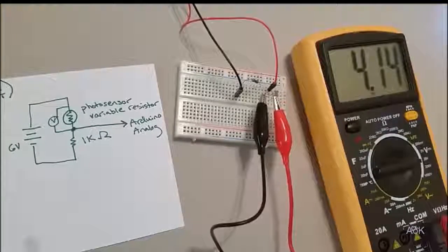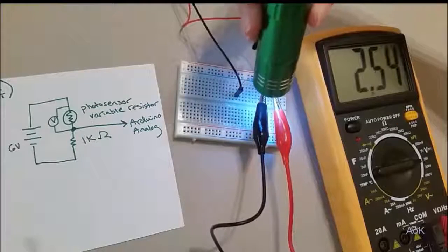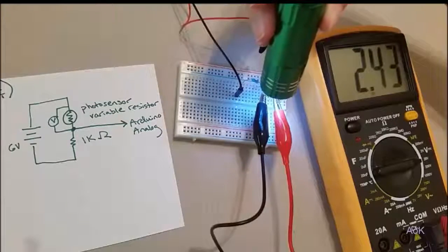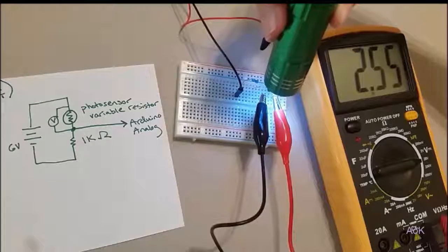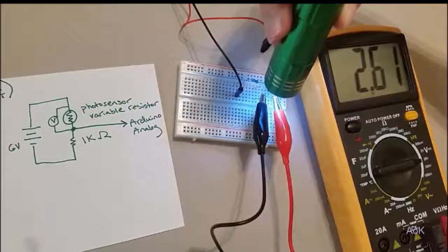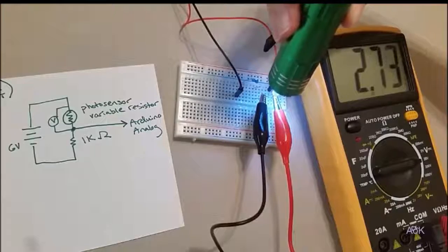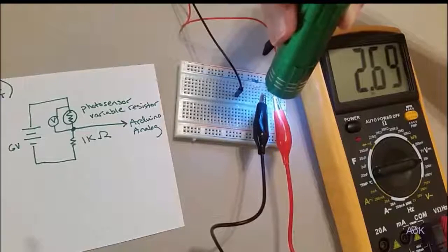What happens when we shine a light on it? Notice that the voltage drop is drastically decreasing. In fact, now the photosensor probably has a resistor value about half of that of the 1k resistor, so only around 500 ohms.